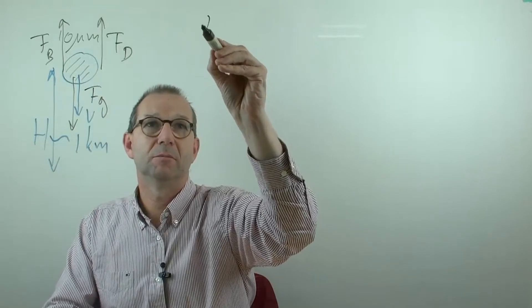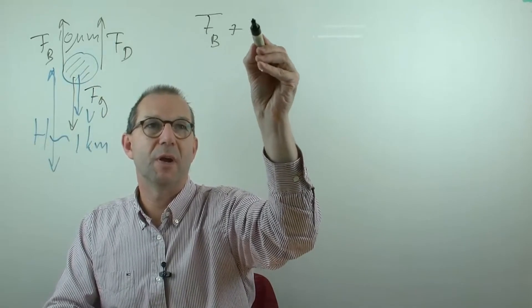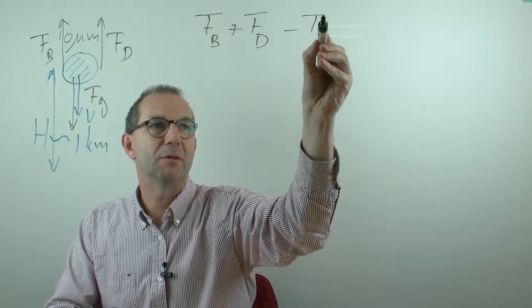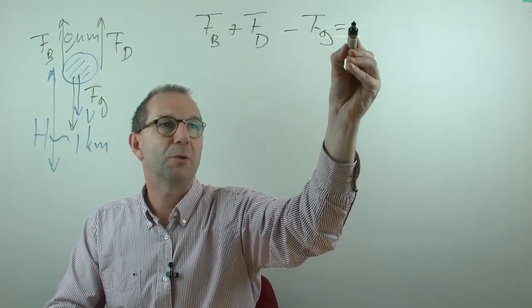These three—buoyancy plus drag upwards minus gravity downwards—should equate to zero.